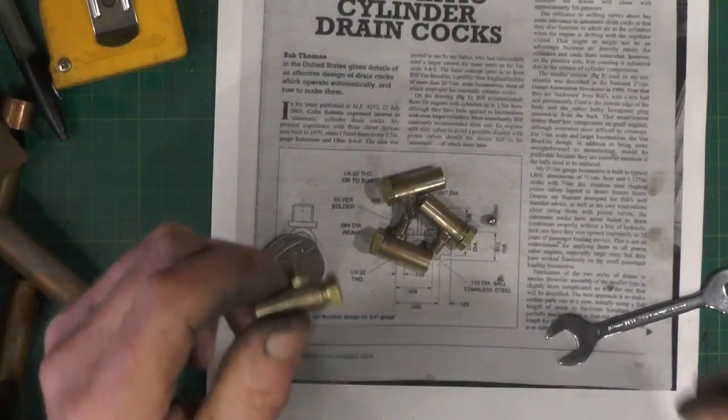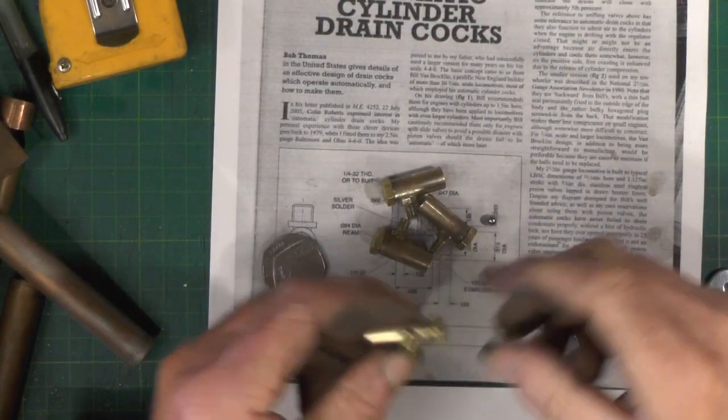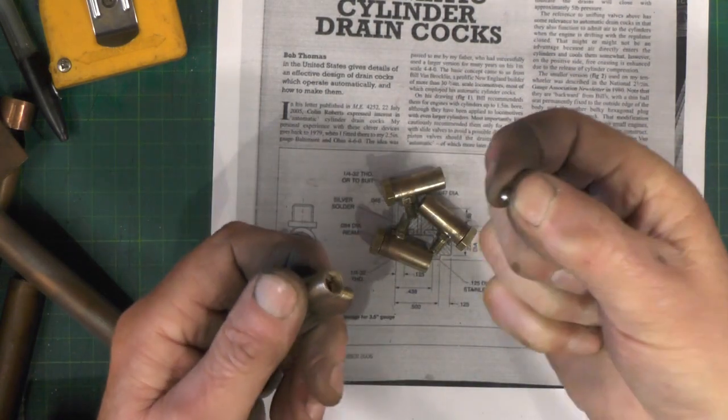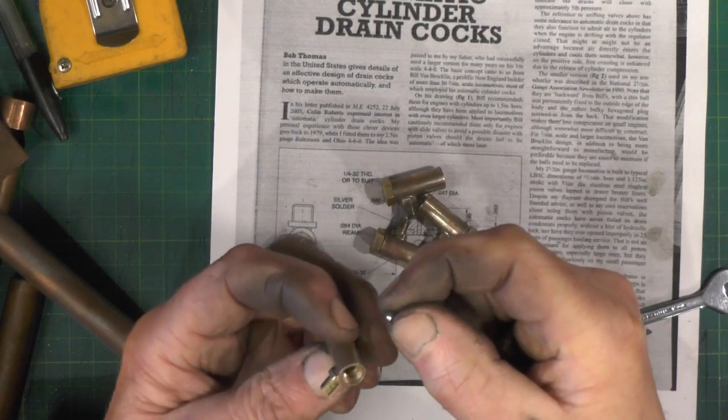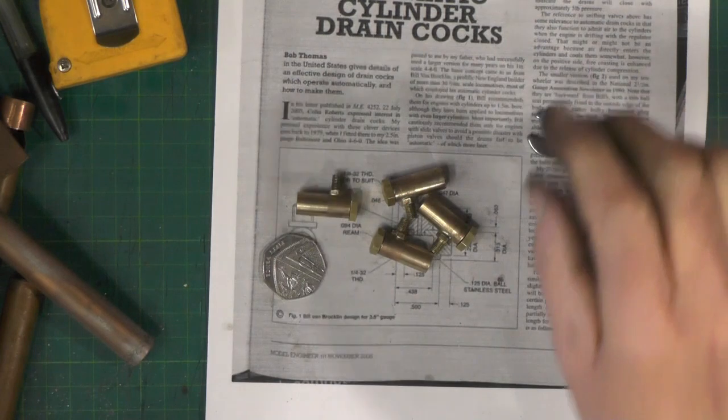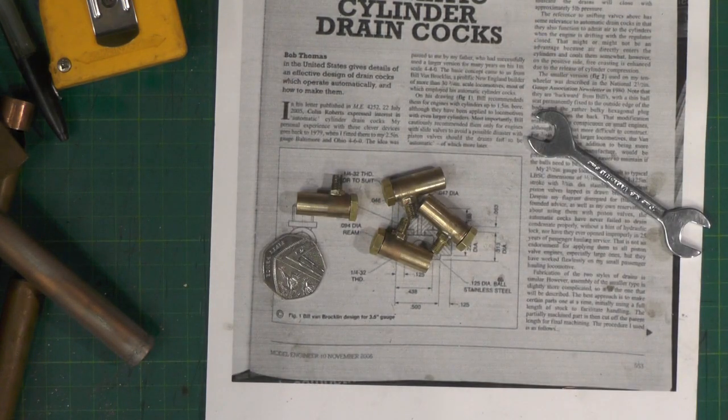All soldered up now. I've just cleaned them up. I've assembled three, I'm just doing this last one. It's the 3/16 stainless steel ball that goes inside. I'll go over to the loco to fit them on now.